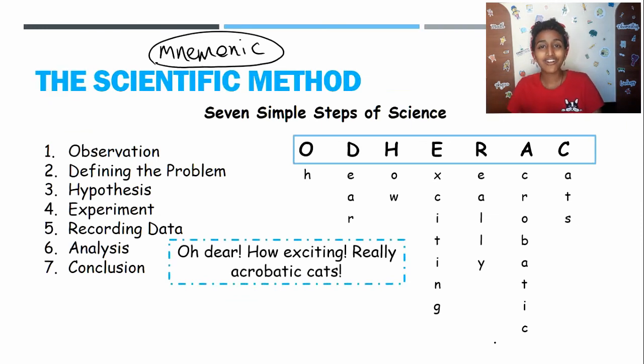So if this is harder to memorize than the actual original list of observation, defining, hypothesis, experiment, recording, data, analysis, and conclusion, then stick to the original list. Or, come up with your own mnemonic. Come up with something better than Oh dear, how exciting, really acrobatic cats.